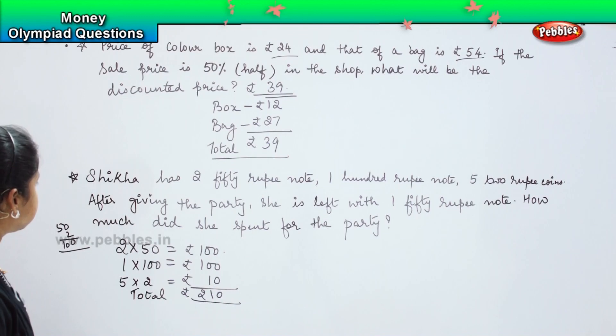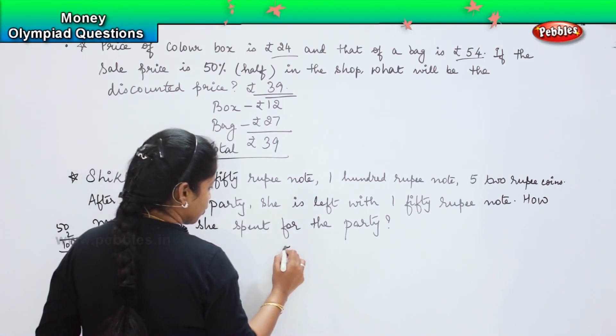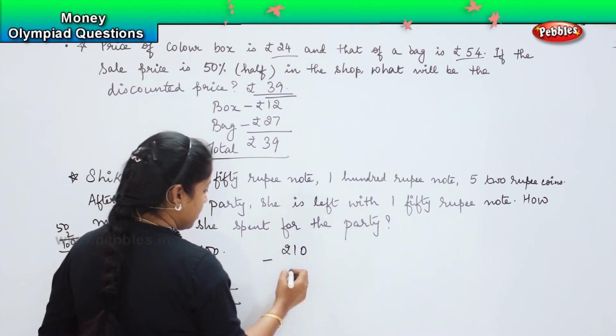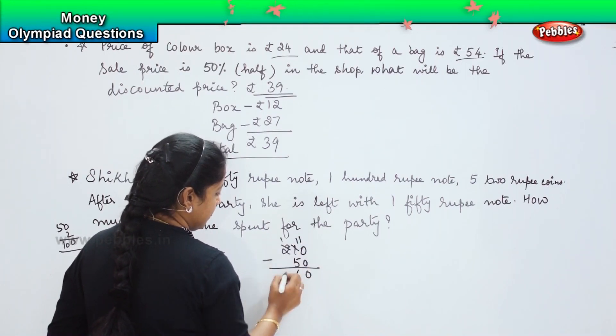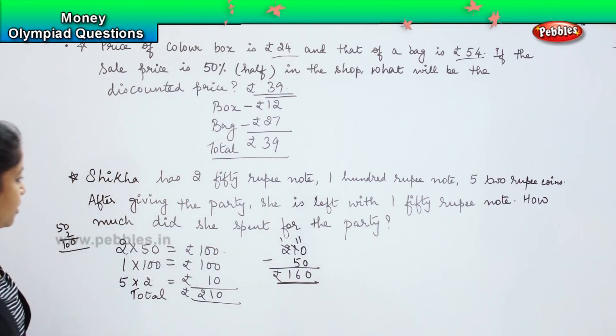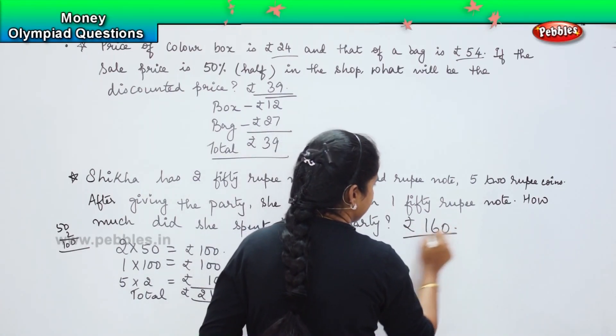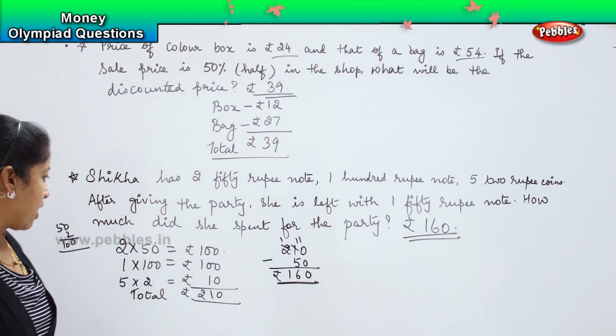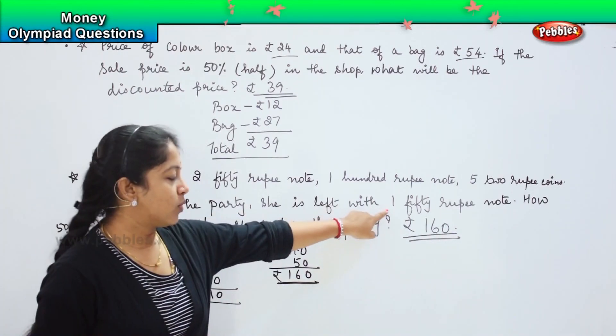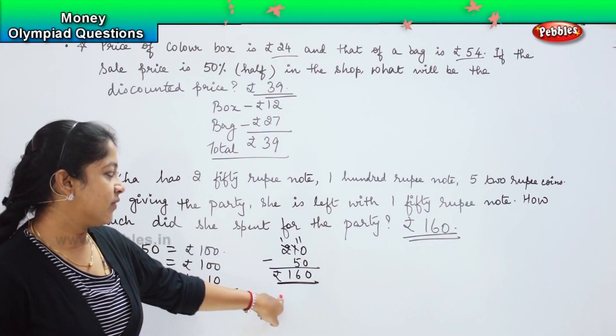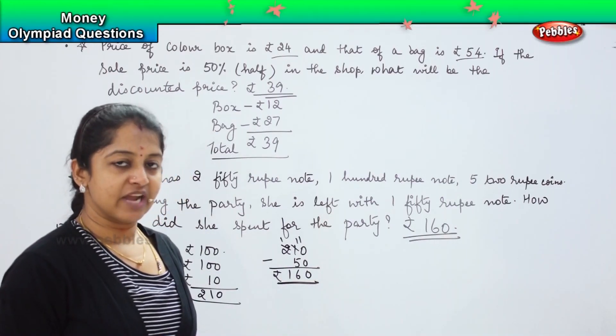Now the question says, after giving the party, she is left with 150 rupee note. So 11 minus 5 is 6 and 1. So which means that how much did she spend? She has spent rupees 160. She spent rupees 160 for the party. Understood how? First, we need to find out what is the total value she had with her and then after that, whatever amount is left with her, we had subtracted it from the total. That will give us the answer that what is the amount which she has spent for the party. So are you clear children? Shall we move with the next question?